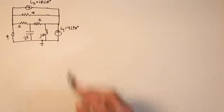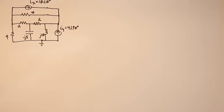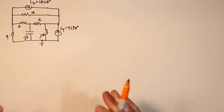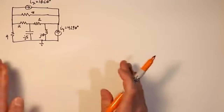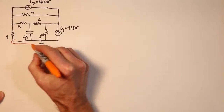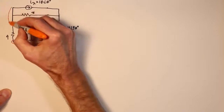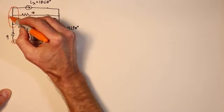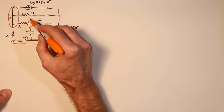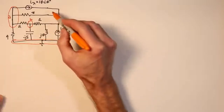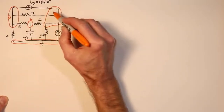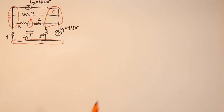The first thing we have to do for our nodal analysis is to identify the nodes. Remember, we have as many equations as we have nodes, less the ground reference node. So I'll indicate our ground reference node first, and then other places where currents can combine and split. We have one right here — we'll call this node A — another one right here, which we'll call node B — and then finally a large one over here, which we can call node C.